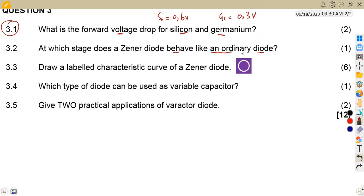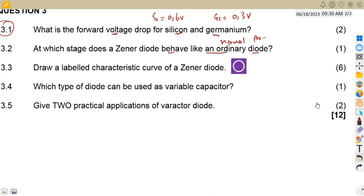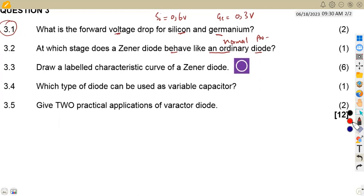So what is the condition where it is going to behave as an ordinary diode? This refers to a normal PN junction diode, meaning to say it must be in forward bias because we know that an ordinary diode operates in forward bias. In reverse bias there is no flow of current, so it must be forward biased.